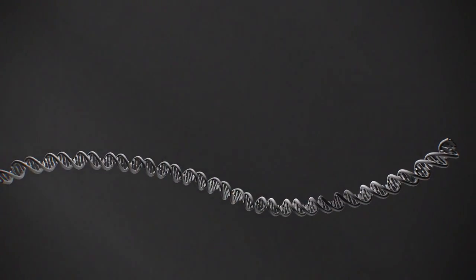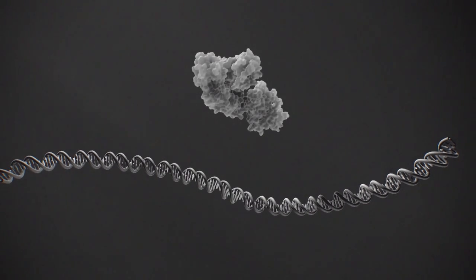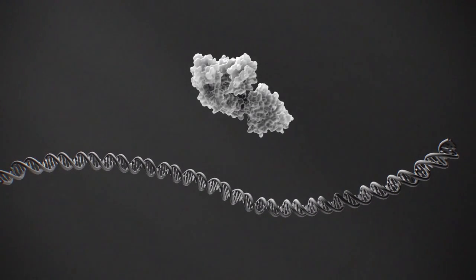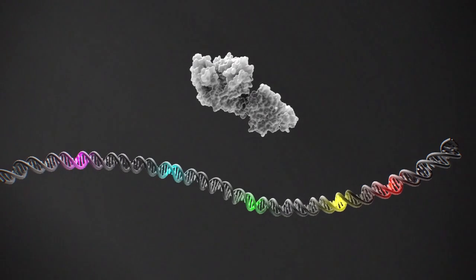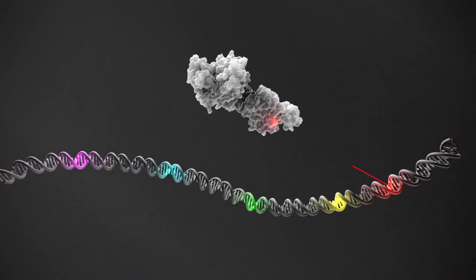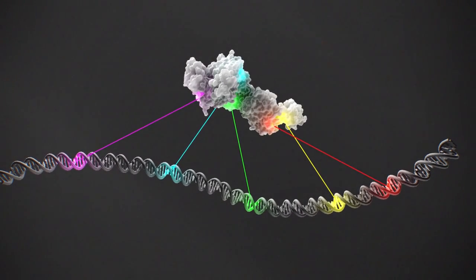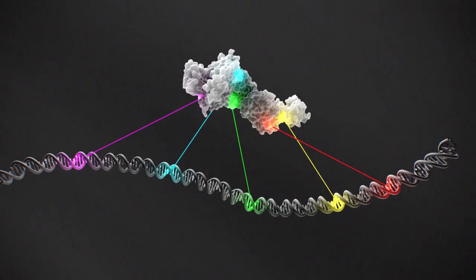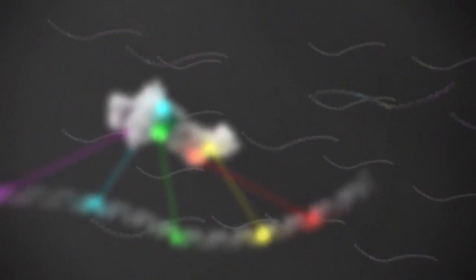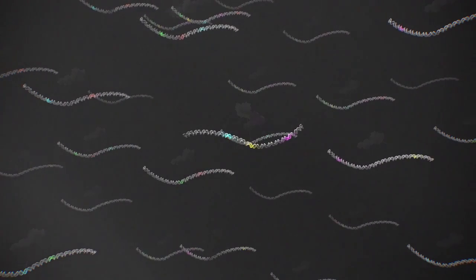We start with the gene for wild-type TAC polymerase, a common PCR enzyme. Random point mutations are introduced into the DNA, corresponding to amino acid changes in the protein. This process of mutagenesis generates millions of gene variants, each coding for different polymerase.